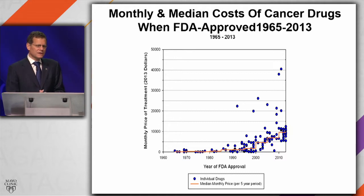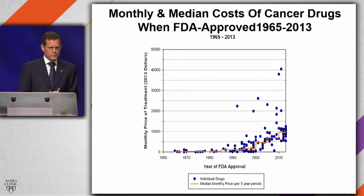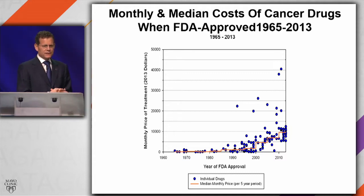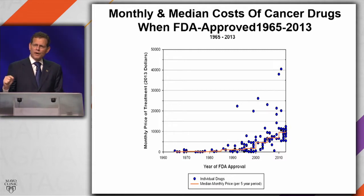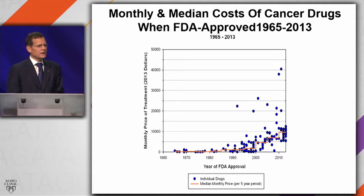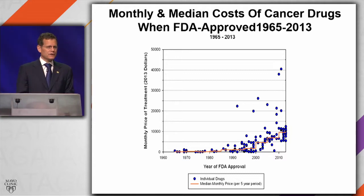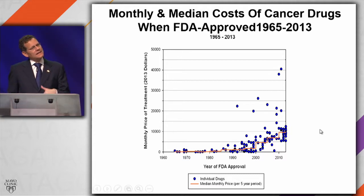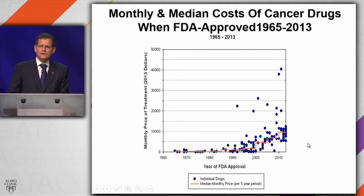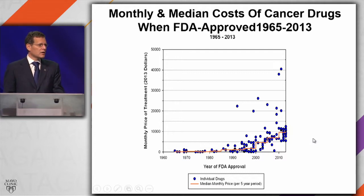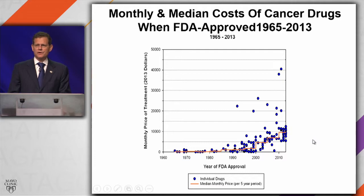What you can see here is the monthly and median costs of cancer drugs from the time of their FDA approval from 1965 through last year. As Peter Bach has written in Forbes magazine, the single best predictor of the price of a drug today is the year of its FDA approval. In a multivariate analysis, that is more important than any other explanation. The rate of rise is dramatic, and as a rough ballpark for cancer, most of the recently approved drugs come in at about $100,000 for each year of use.